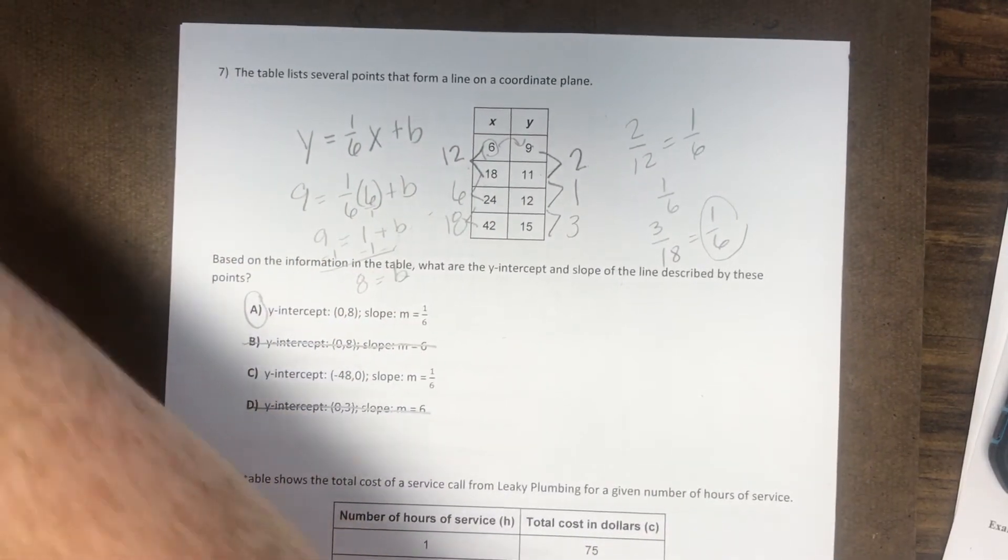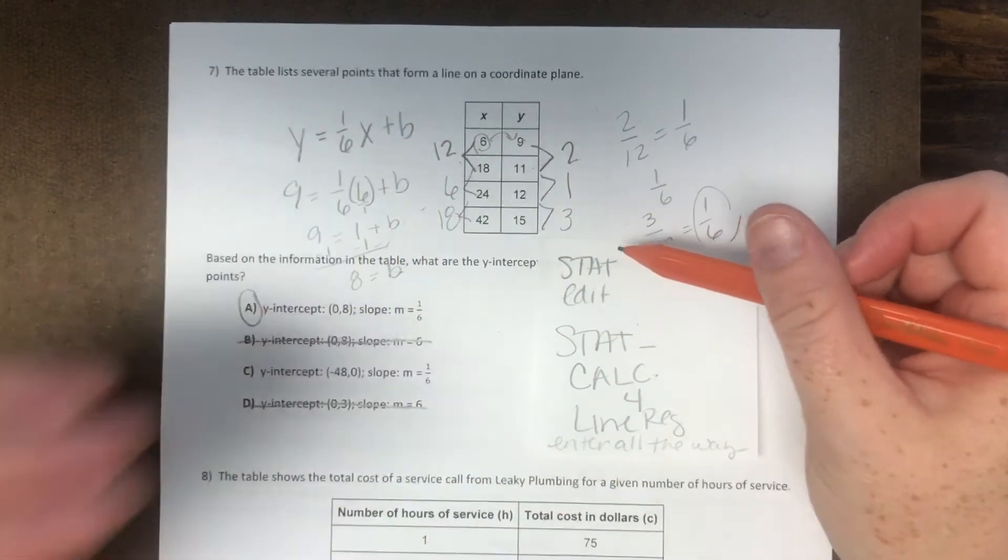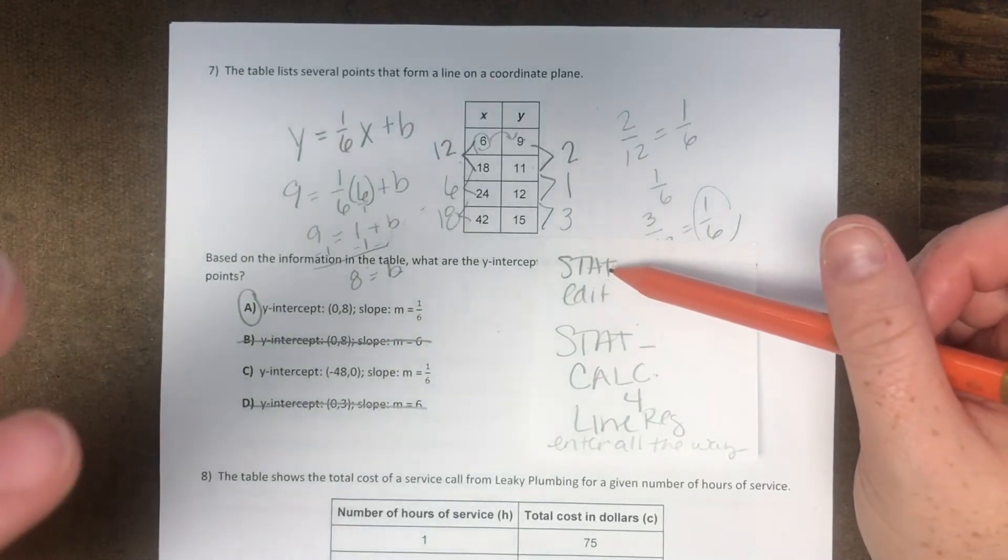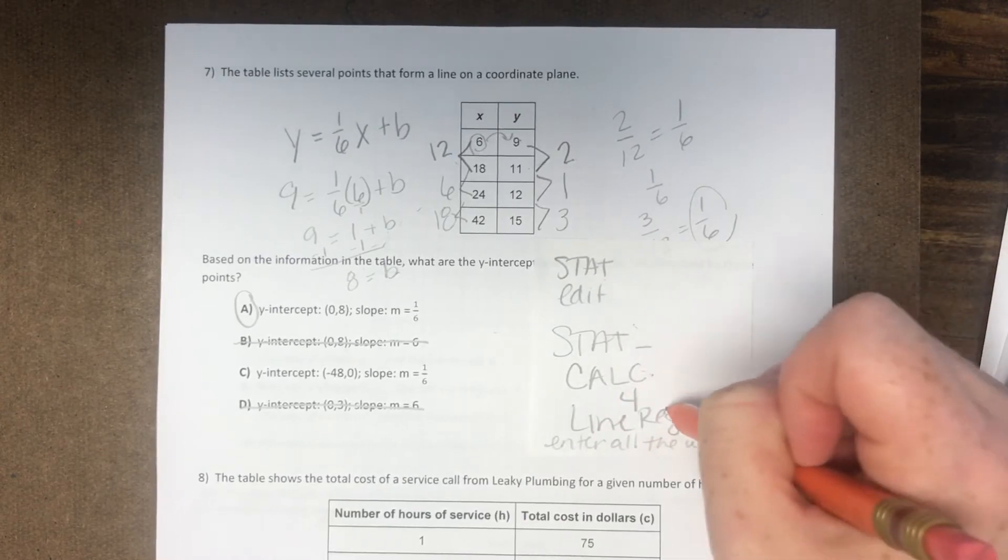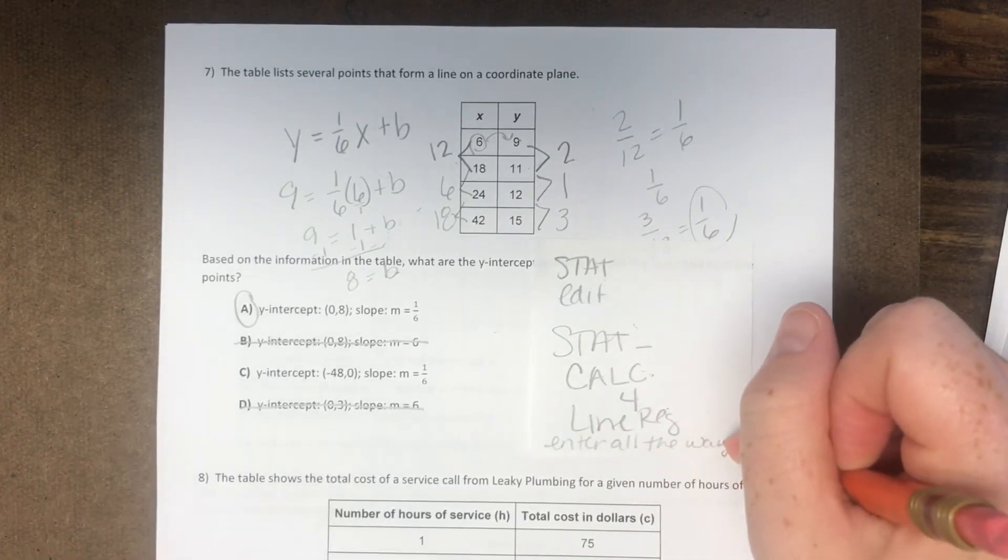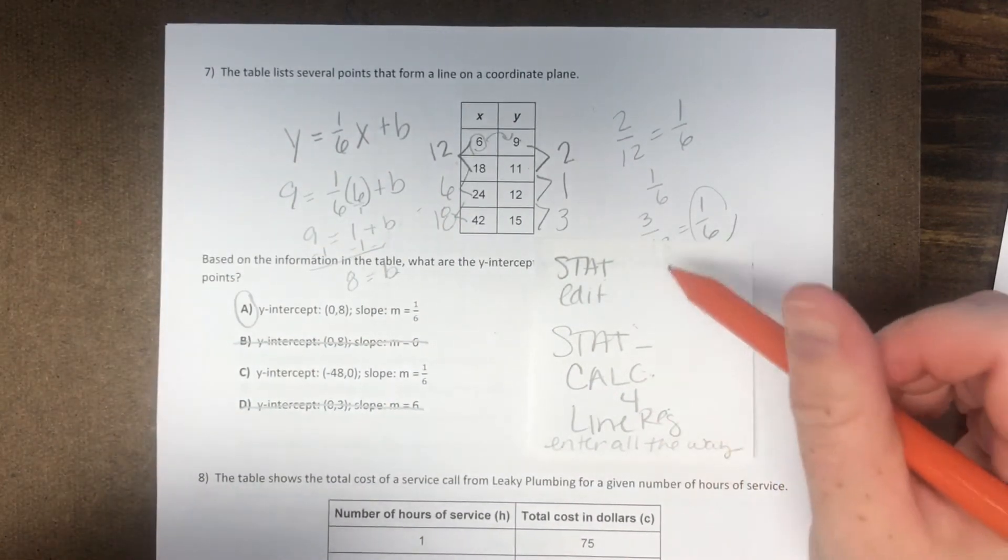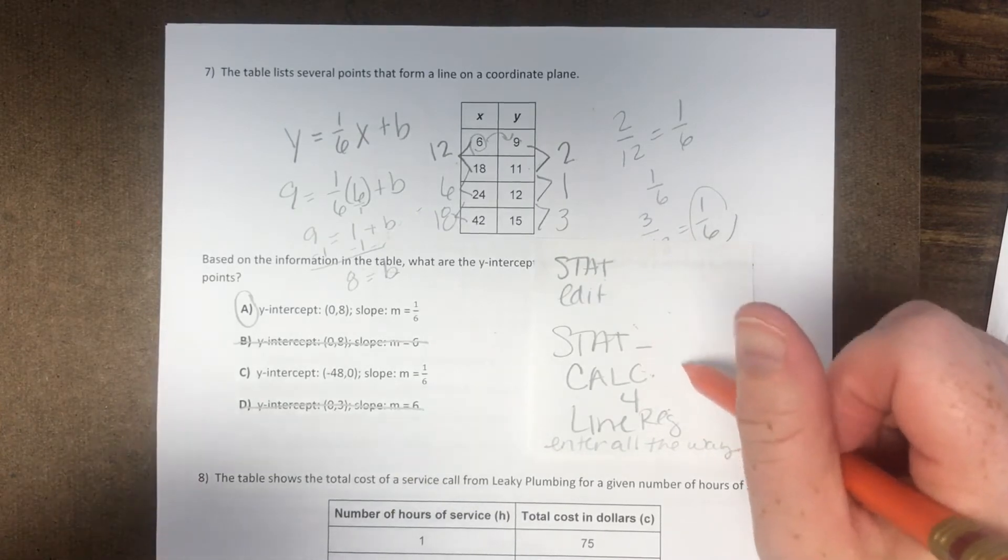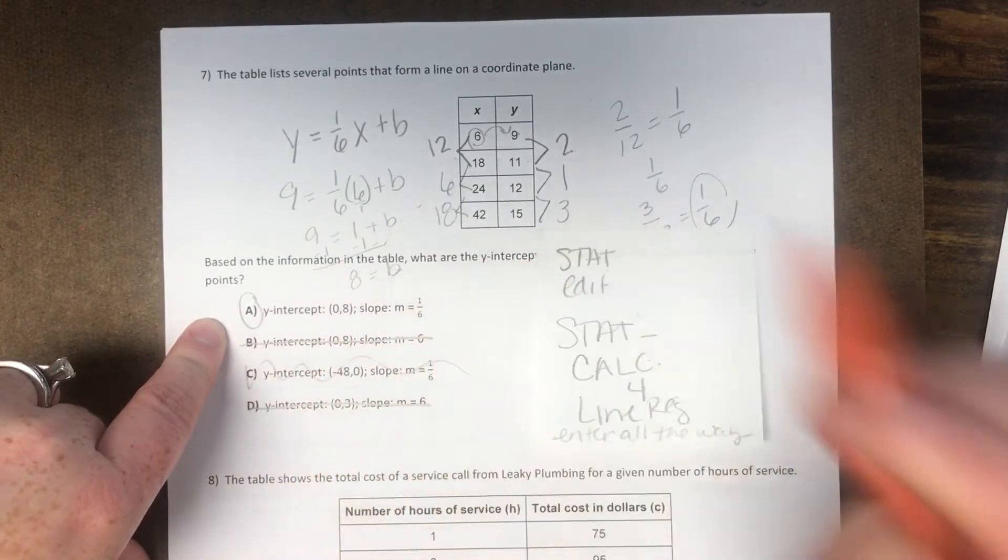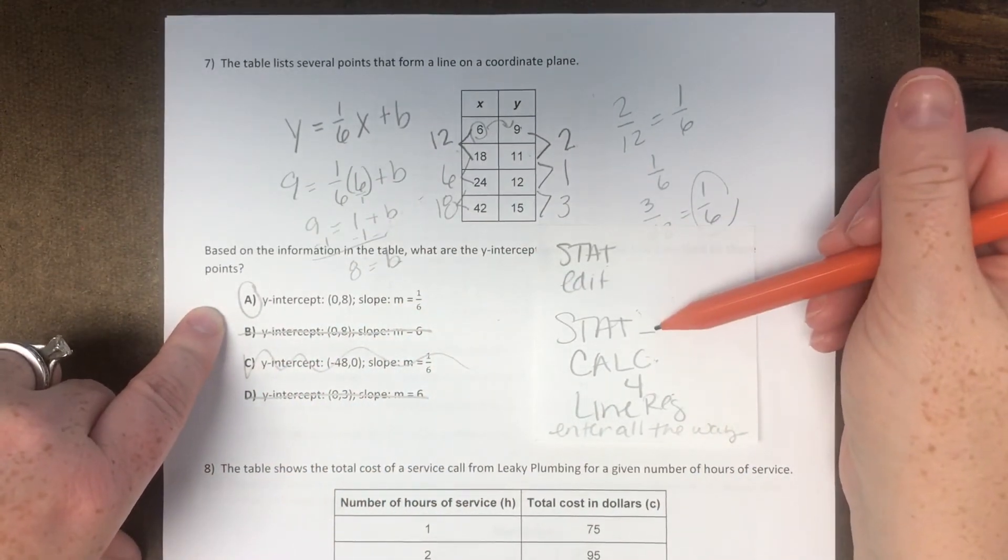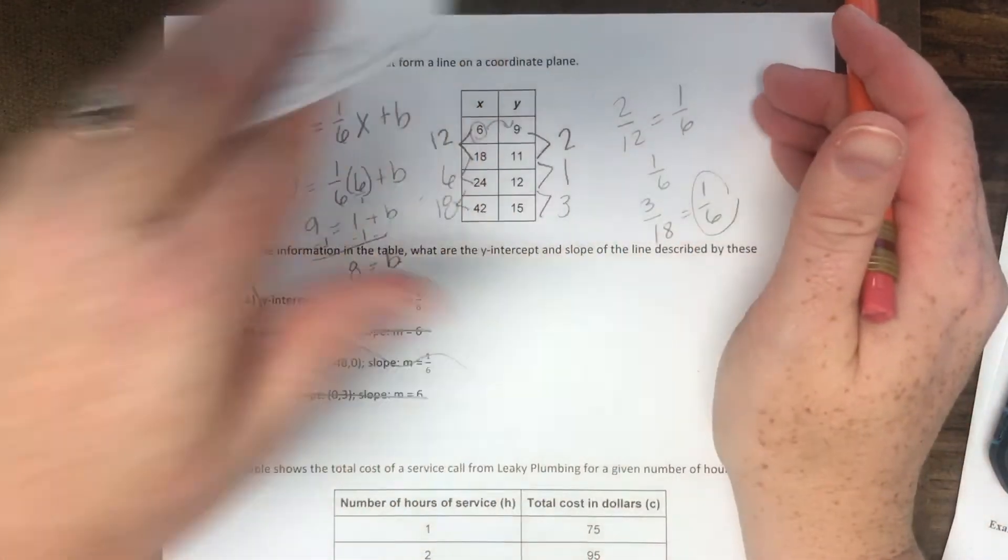So remember your steps for putting in the calculator. You're going to go stat, and then you're going to edit, and you're going to put all that stuff in your calculator. Then stat, calc, line reg, and then enter all the way. And it should push you down to that AX plus B. So once you do that, A is going to be your slope, B is going to be your y-intercept. And it should match up with letter choice A. So kind of remember those. We have that notes page that you can look back at to remember the steps on that.